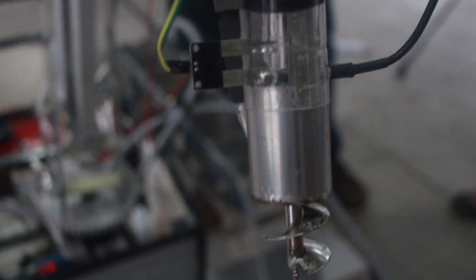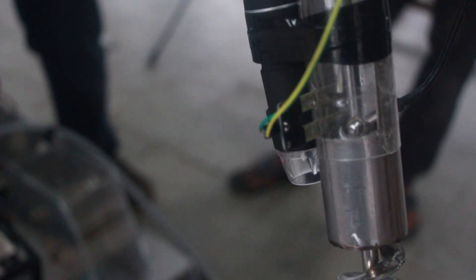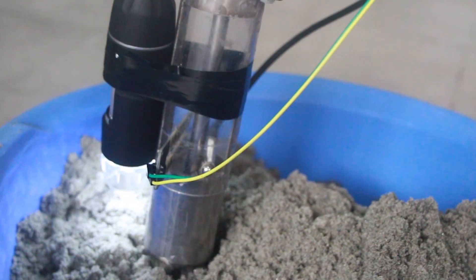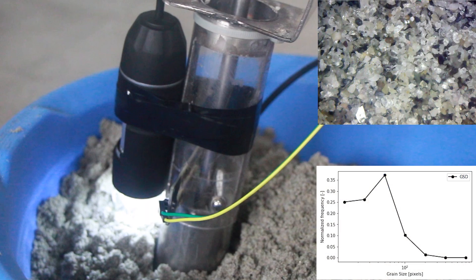An auger soil sampler consists of soil temperature sensor, moisture sensor and digital microscope to simultaneously collect and analyze soil characteristics and grain structure.